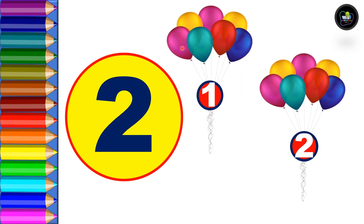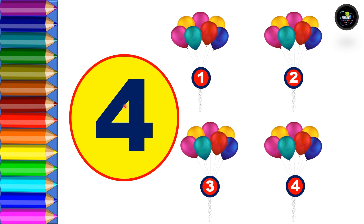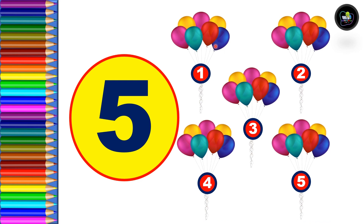Two: one, two. Three: one, two, three. Let's see — one balloon, two balloons, and three balloons bunch of balloons. Next, four: one, two, three, and four. So you can see here four bunches of balloons.